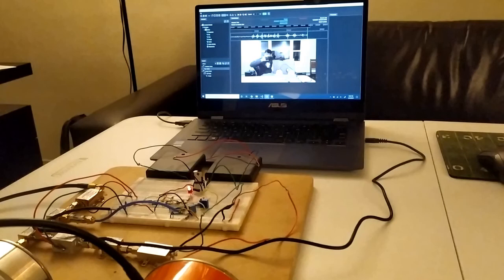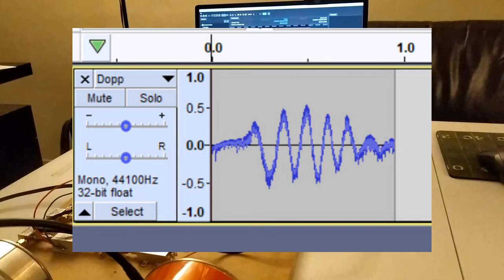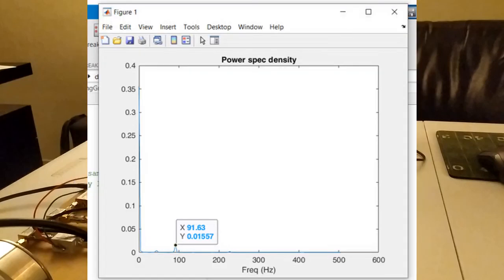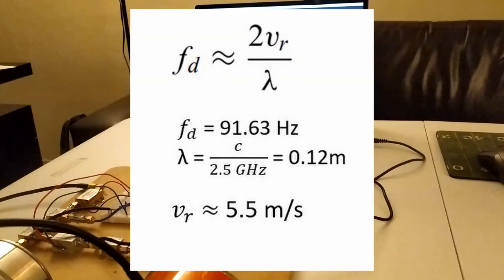So what I'm doing right now is I'm taking that single instance and converting it into a WAV file. That file is then read in MATLAB and I can take the fast Fourier transform and plot the response. When we look at our plot we can see that there's a peak at 91.63 hertz. With this information we can deduce that my hand was moving approximately 5.5 meters per second.